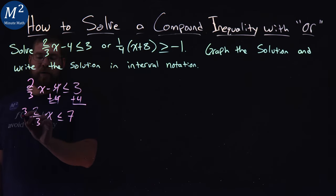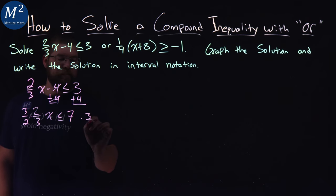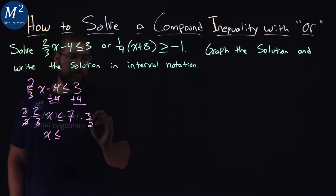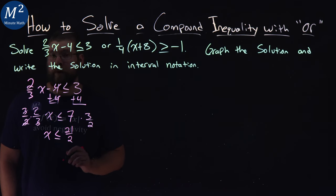Now, I want to multiply both sides by 3 halves here. It eliminates the 2 thirds on the left, so I have x by itself. It is less than or equal to, 7 times 3 is 21, over 2 is just 21 over 2.